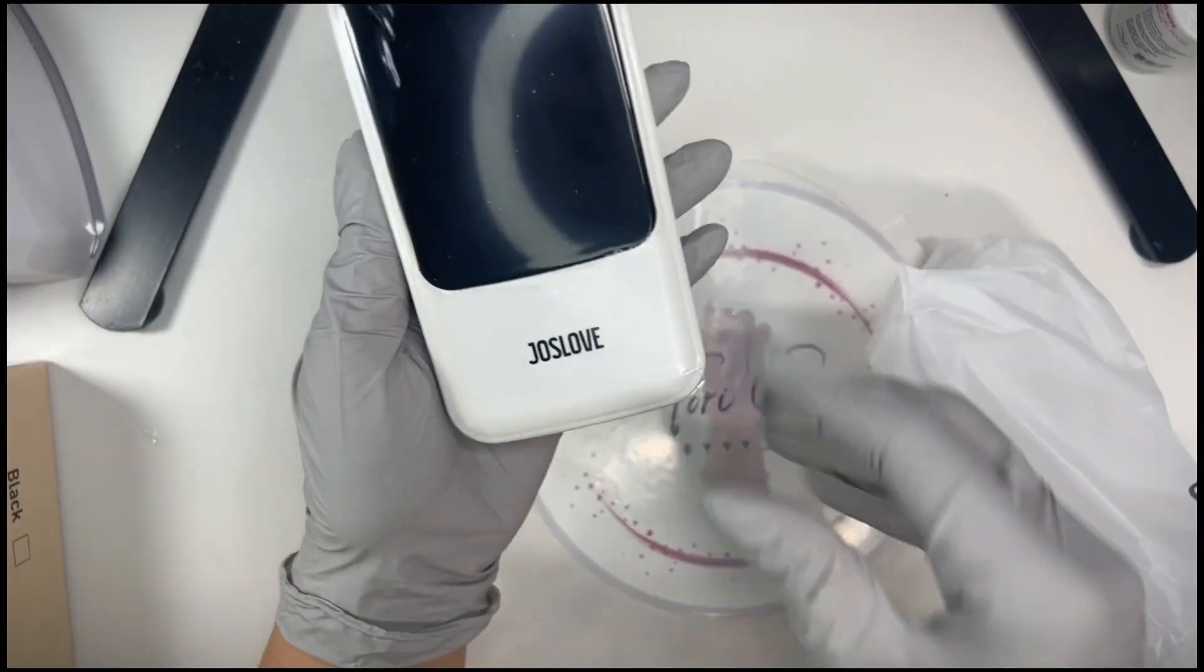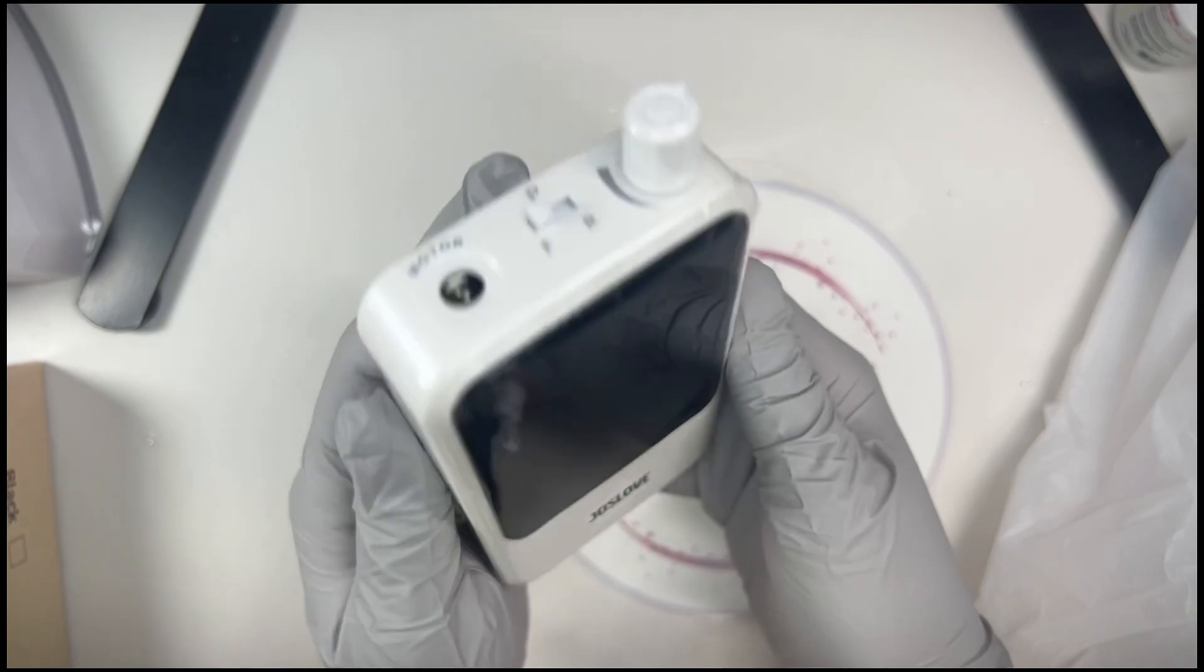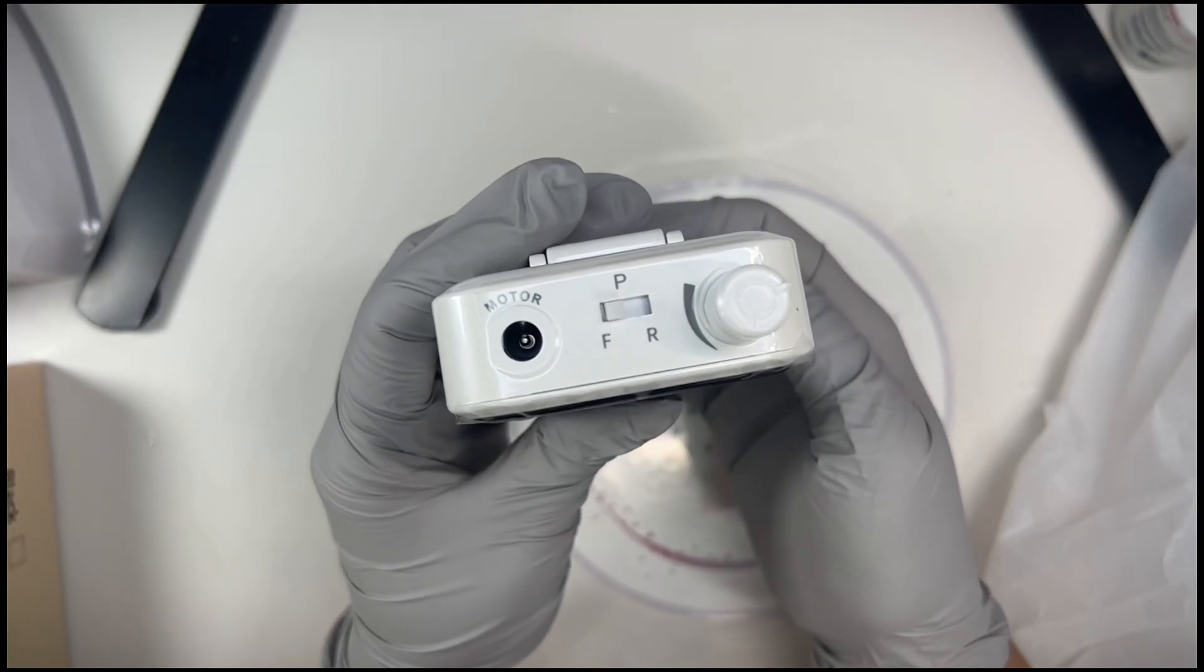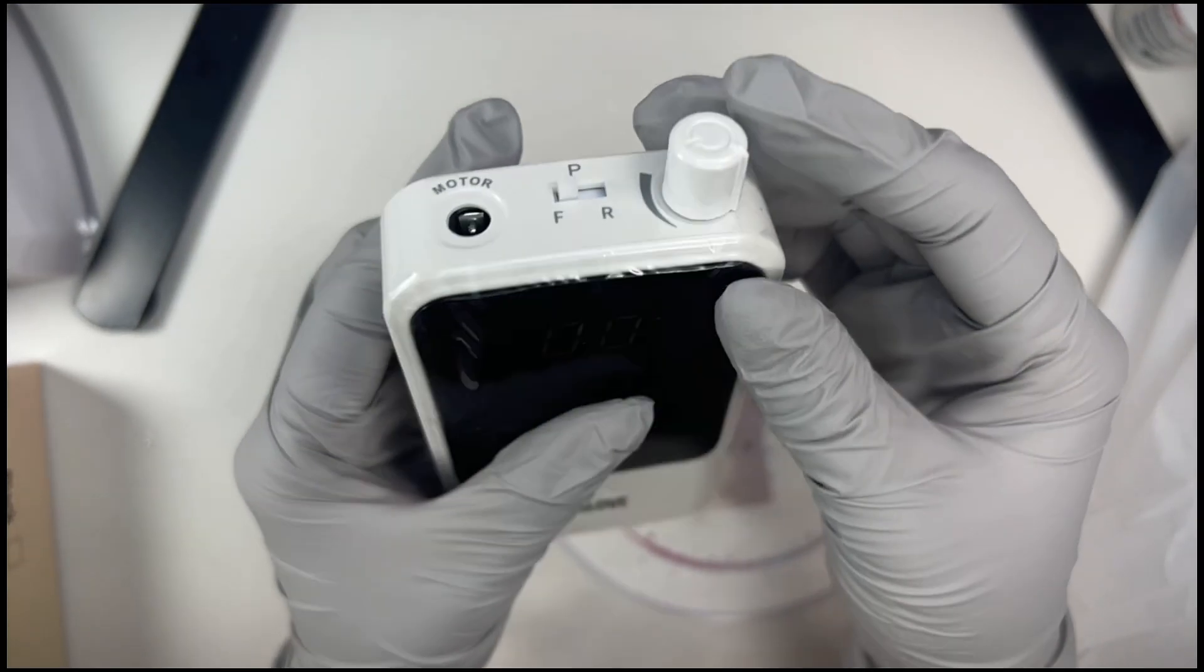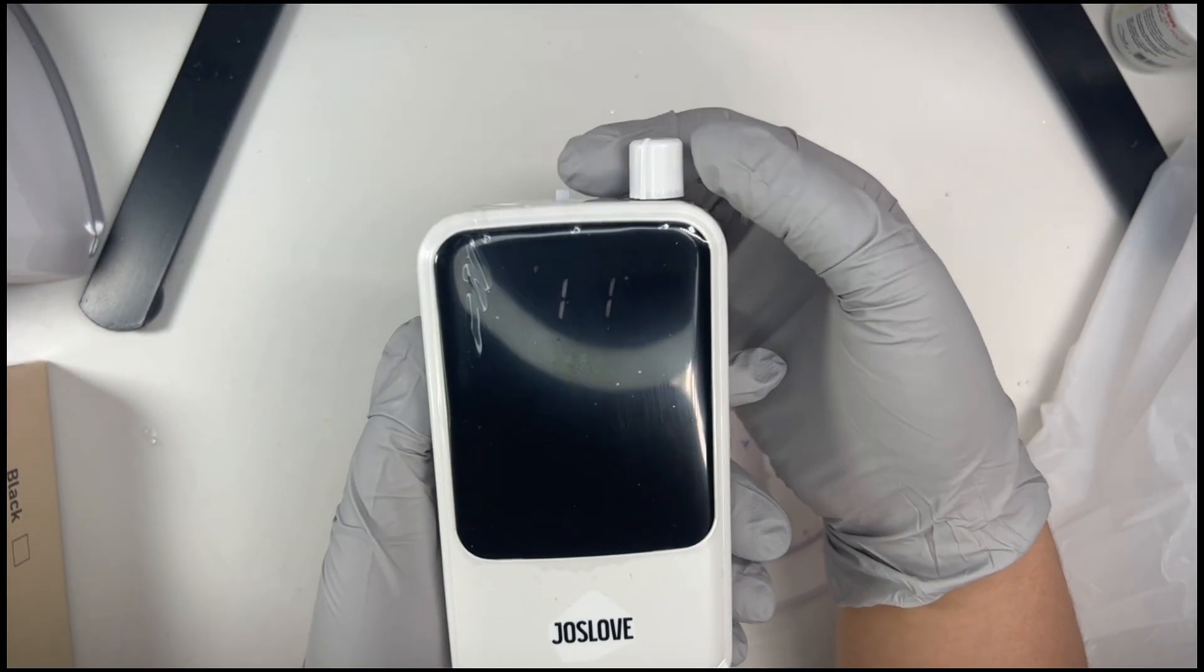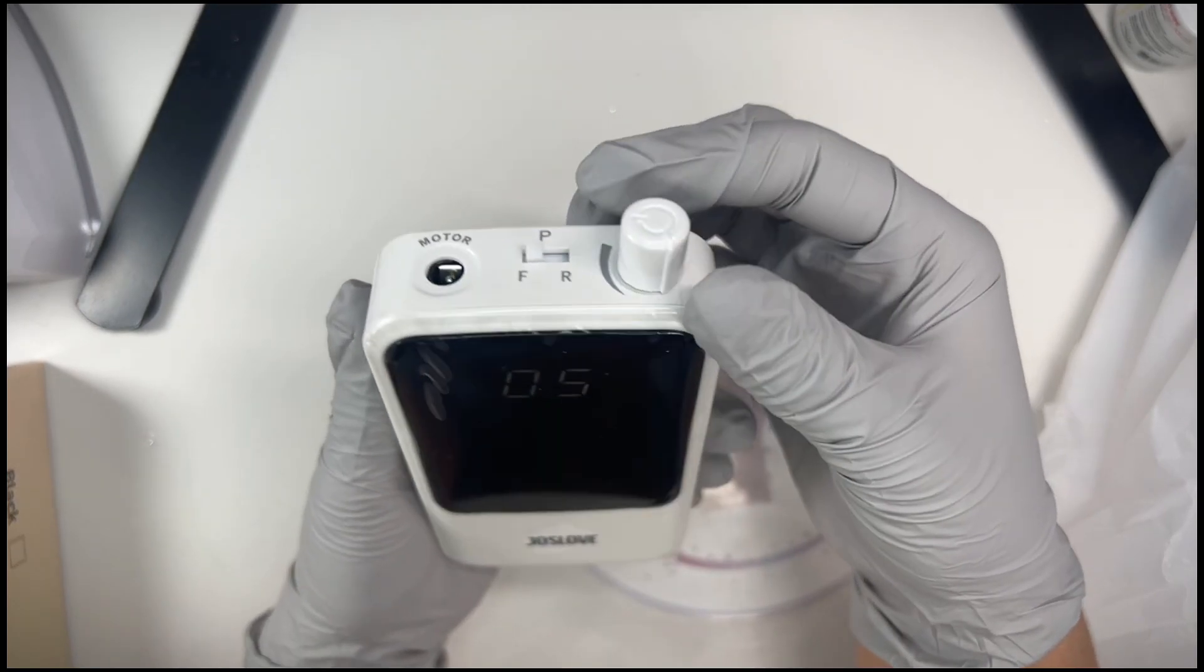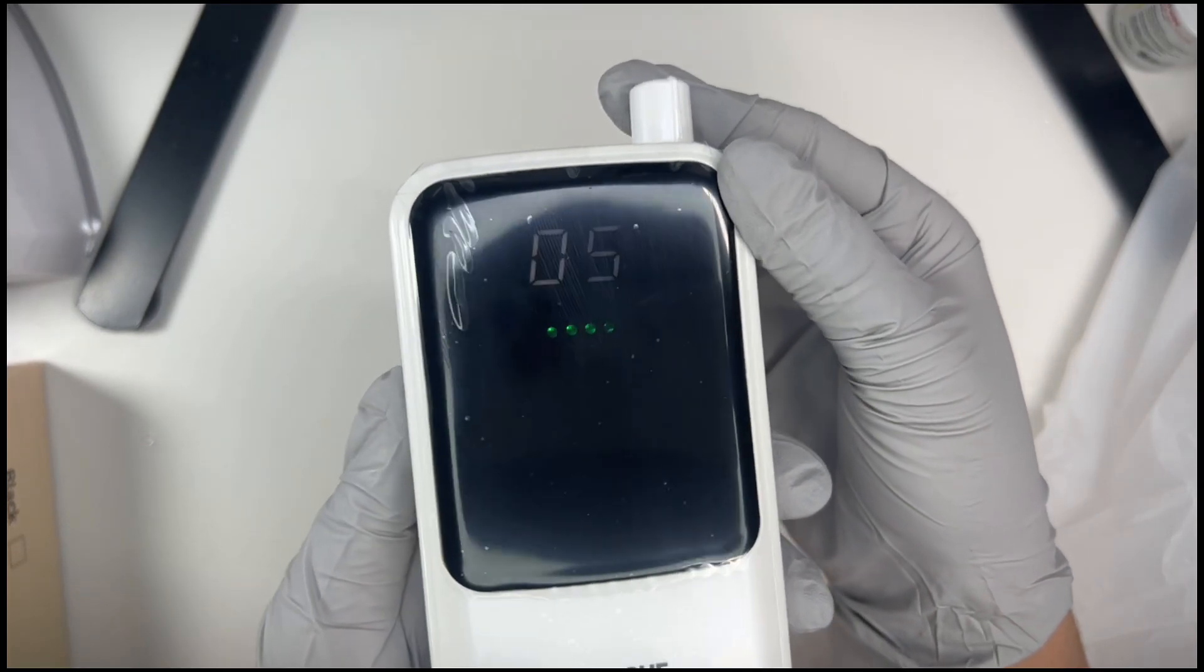It also comes in a black and a pink as well. This drill does have a dial here so you can raise or lower the speed of the drill as you need, and this does go up to 35,000 rpm. As you can see, it does have an LED screen so that is really nice.